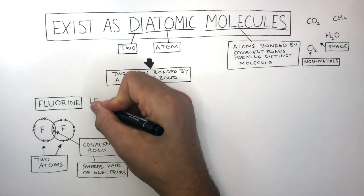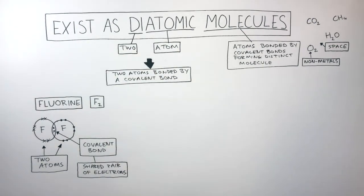F2 is the molecular formula of a fluorine molecule. The molecular formula of every diatomic molecule is written like this. You just write the symbol and then a 2 at the bottom.